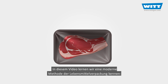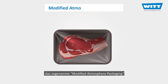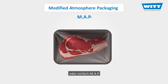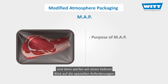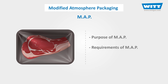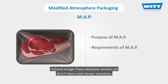In this video, we're going to learn about a modern method of food packaging called modified atmosphere packaging, or simply MAP. First, we'll talk about the purpose of this method and then we'll take a deeper look at its requirements. Finally, we'll consider some examples in our further understanding of MAP.